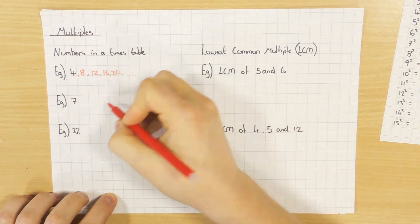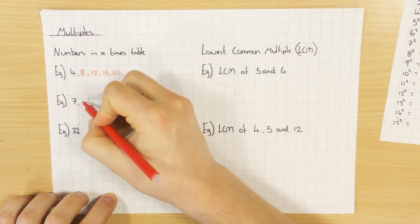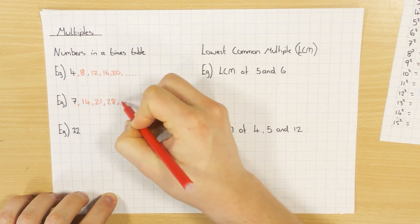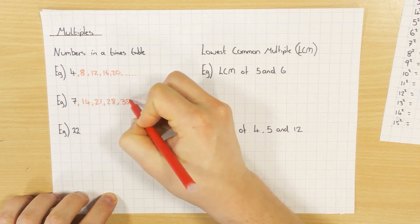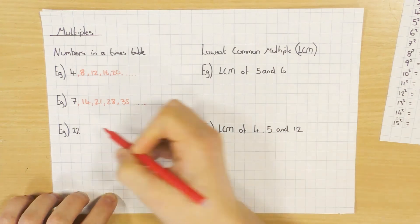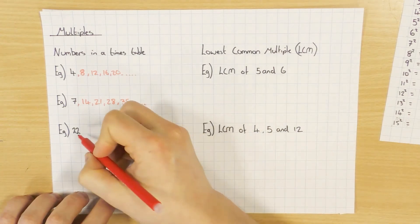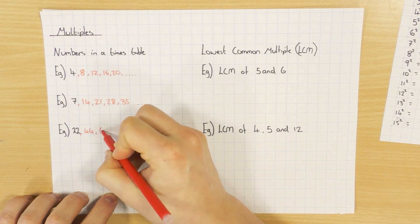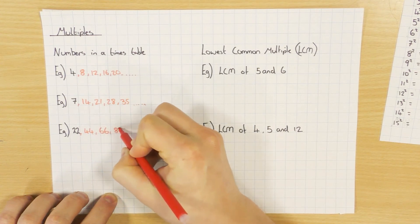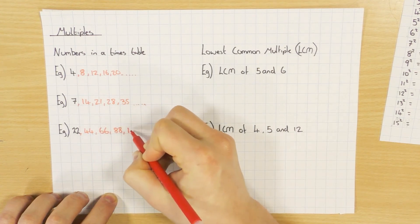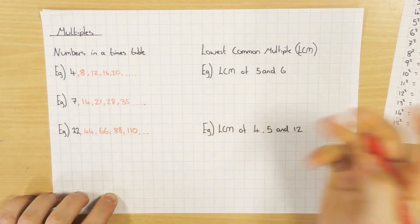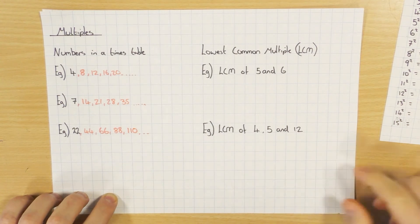Multiples of 7: again it's just the 7 times table — 7, 14, 21, 28, 35 and so on. And even big numbers like 22: exactly the same thing — 44, 66, 88, 110 and so on. You can keep going. So multiples are just numbers in the times table.